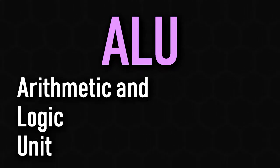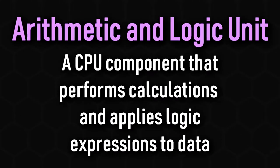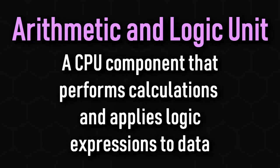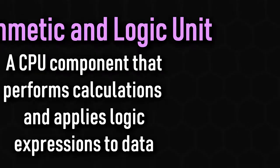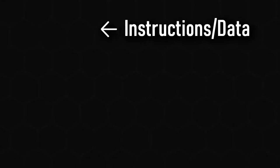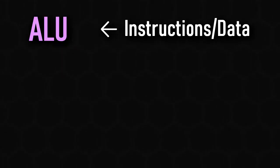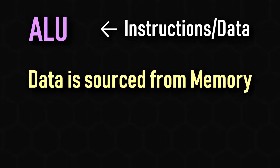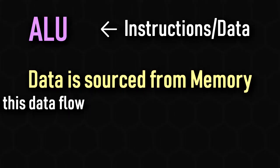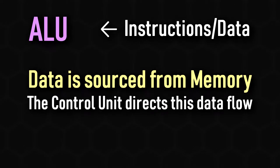The ALU, or arithmetic and logic unit, is the part of the CPU that deals with logic operations such as XOR, AND, and NOT, and calculations on data like ADD and SUB. The data that goes into the ALU is taken from memory, which is directed by the control unit, which we'll get to later.